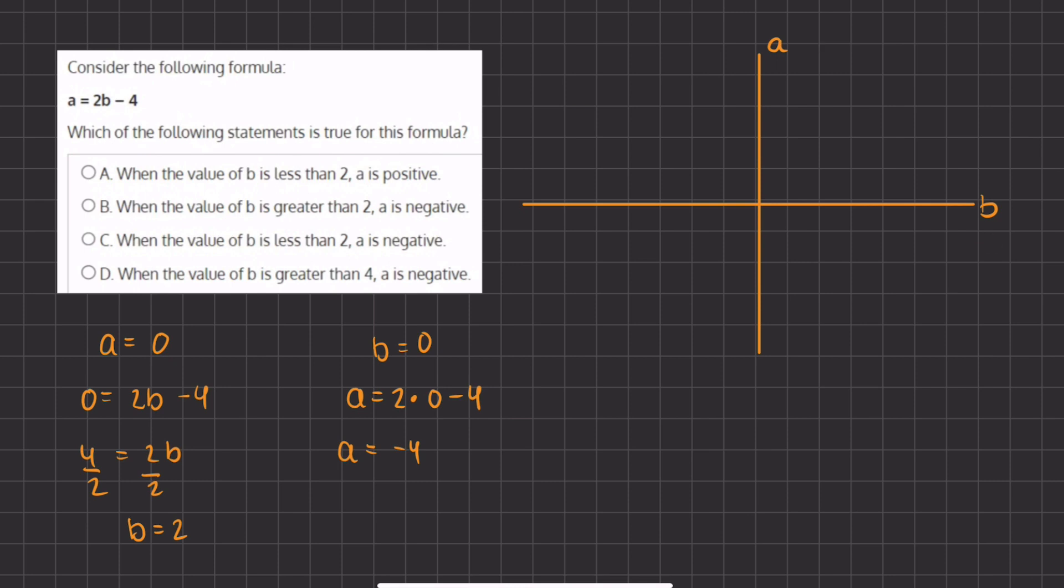Alright, so now let's plot our two points. We have a equals 0 and b equals 2, so that's going to be right around here. And our second point is when b equals 0 and a equals negative 4. So that's going to be around here. So now let's connect these two points to see our linear function.